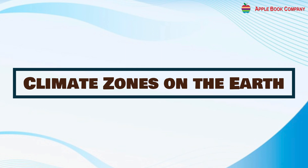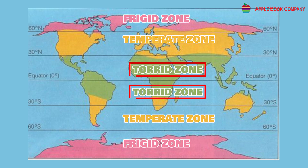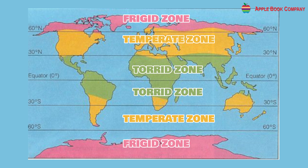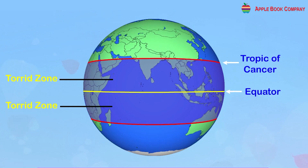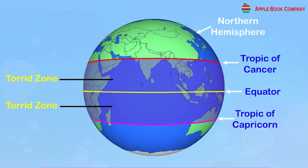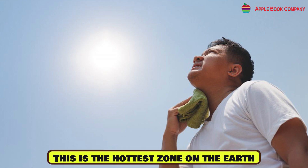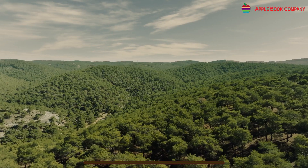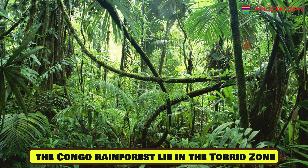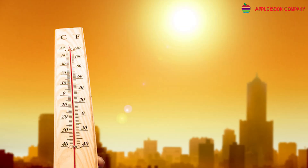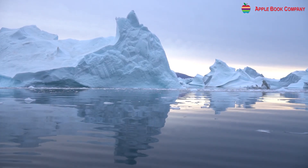Climate Zones on the Earth. Based on these factors, the earth is divided into three climate zones: the Torrid Zone, the Temperate Zone, and the Frigid Zone. The Torrid Zone includes the equatorial region and stretches from the Tropic of Cancer to the Tropic of Capricorn. It is the hottest zone on earth, receiving direct sunlight throughout the year. The Amazon Rainforest and the Sahara Desert lie in this zone.